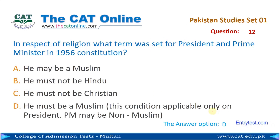Question number 12: In respect of religion, what term was set for the president and prime minister in the 1956 constitution? The correct answer is D — he must be a Muslim. This condition was applicable only on the president; the prime minister may be non-Muslim.